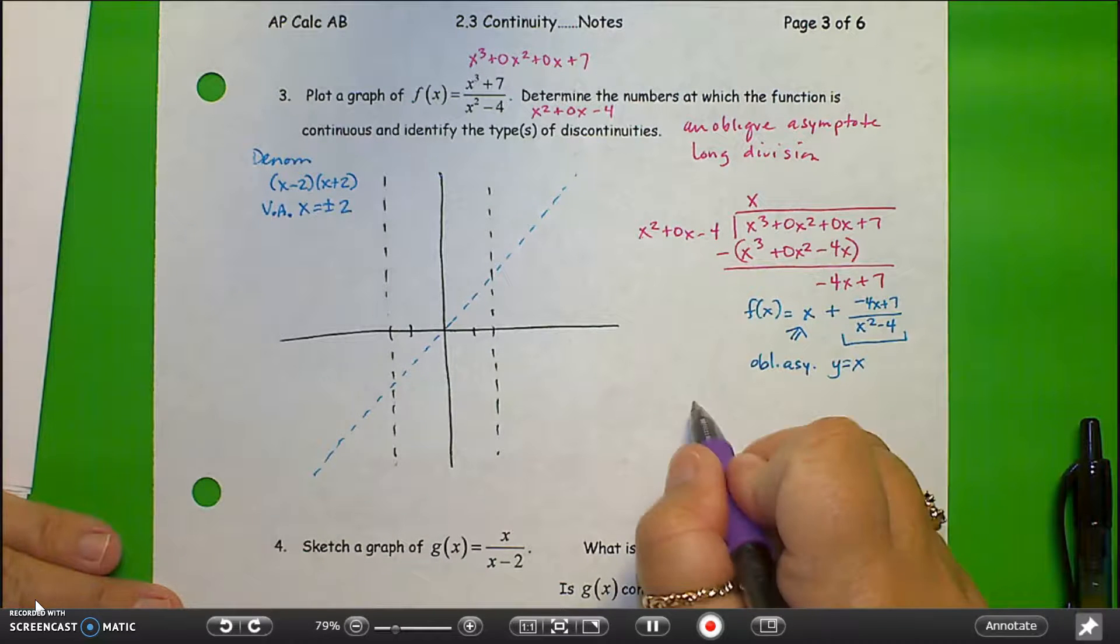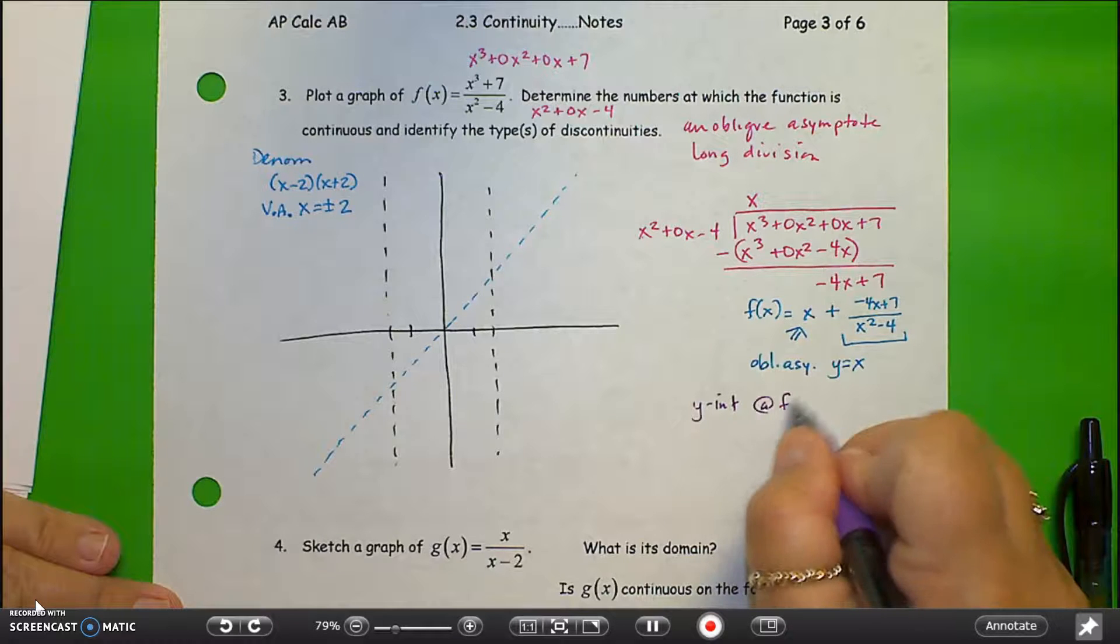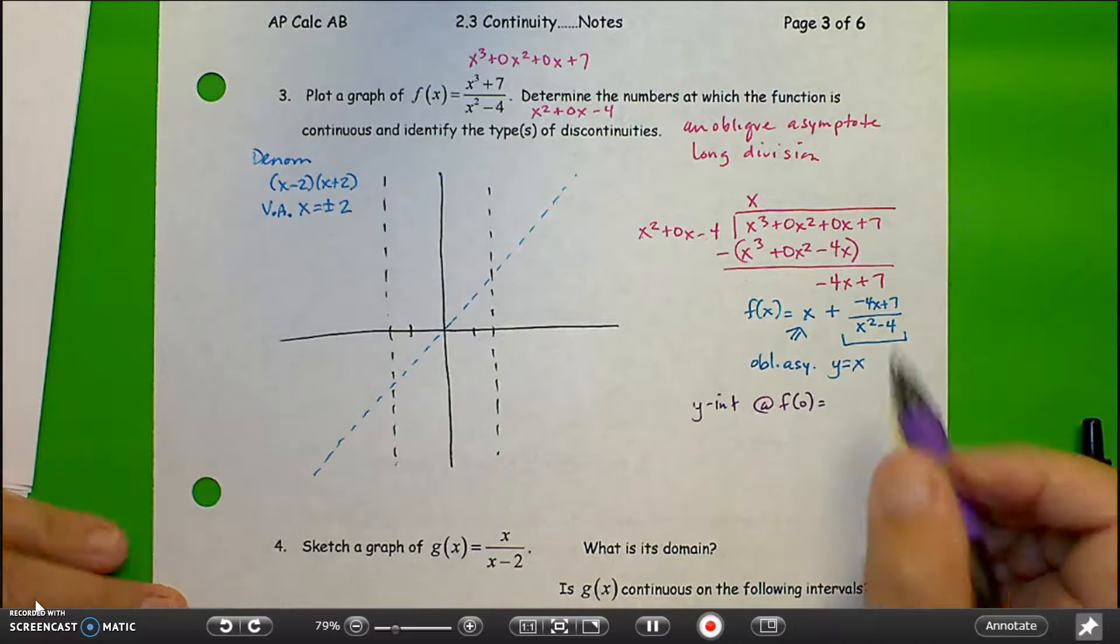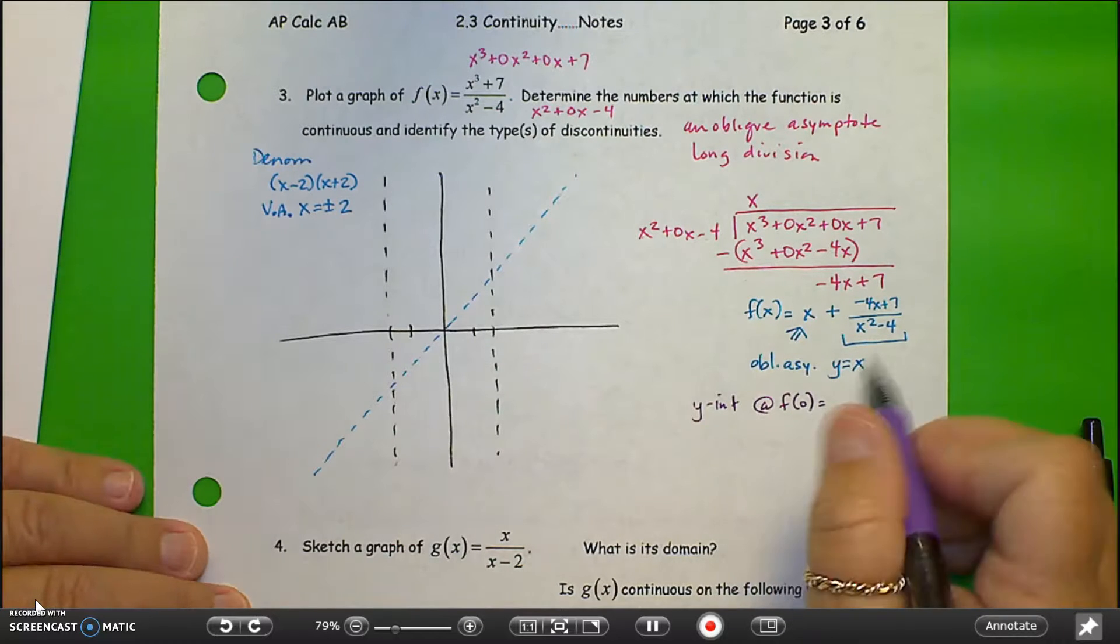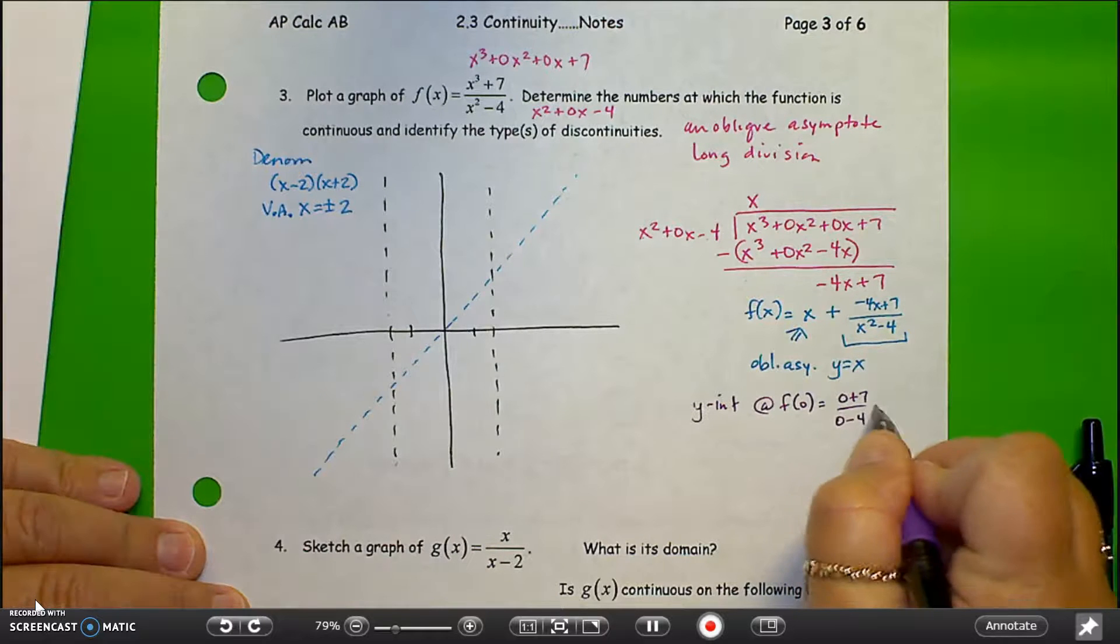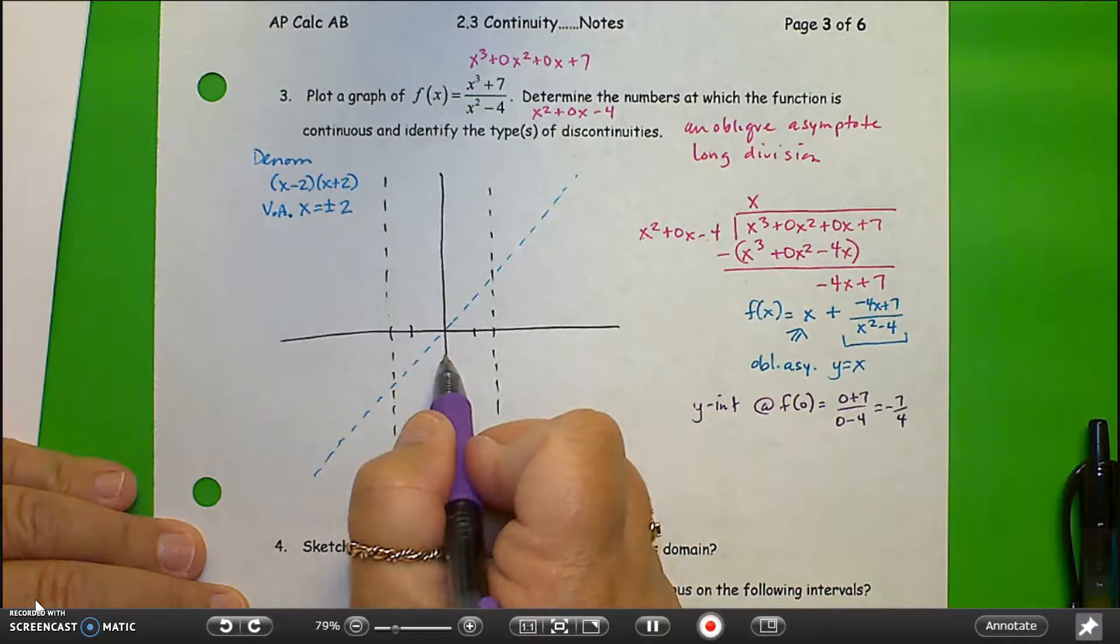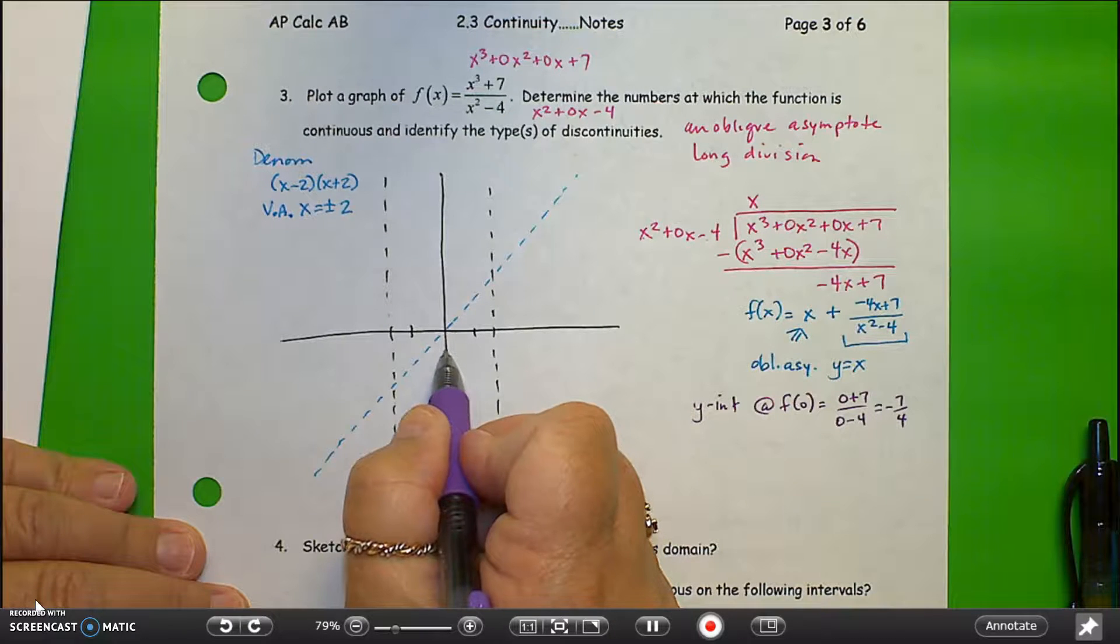We need a couple other points here to figure out what portions are populated with the graph. One thing we can do is find the y-intercept. The y-intercept is at f of 0. If we plug in 0 to the function, we get the numerator 0 plus 7, the denominator is 0 minus 4. So we have negative 7 fourths. I'm going to just eyeball where that goes right here.